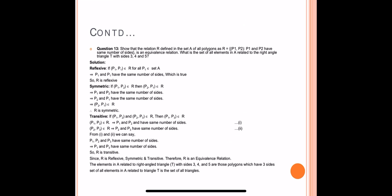The next question: show that the relation R defined in the set A of all polygons is an equivalence relation. Here set A is all polygons, and R = {(P1, P2) : P1 and P2 have the same number of sides}. P1 is the first polygon, P2 is the second, and the definition is that they should have the same number of sides.